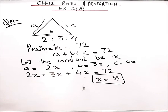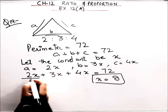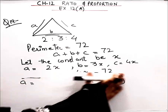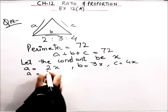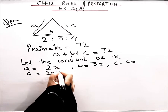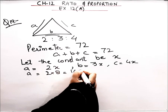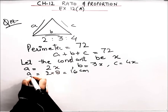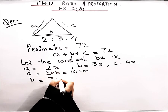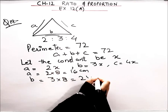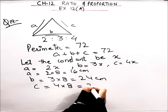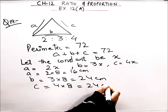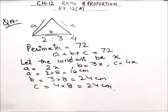Now we can find all the sides. Side a = 2x = 2×8 = 16 cm. Side b = 3x = 3×8 = 24 cm. Side c = 4x = 4×8 = 32 cm. We simply substituted x = 8 into each expression.